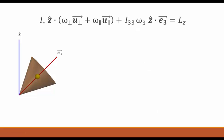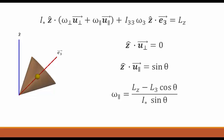The conservation of the angular momentum above the z axis now takes this form. We know that the z axis dotted with u perpendicular will be zero, since the dot product of any two perpendicular vectors will always be zero. And using trig, we can find that the z axis dotted with u parallel is equal to sin theta. In only these, we can solve for omega perpendicular.